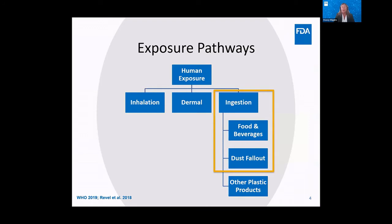I'll jump right into microplastics in foods. I wanted to start with the findings from our scientific review with respect to the potential pathways of microplastics exposure to humans. These include inhalation, dermal, and ingestion. Ingestion of microplastics may occur via consumption of food and beverages, dust fallout of microplastics in the atmosphere during meal preparation at homes, as well as oral exposure to plastic products such as toothbrushes. The remainder of this presentation will focus on ingestion, and in particular on the ingestion of food and beverages, and I'll briefly mention the issue of dust fallout.